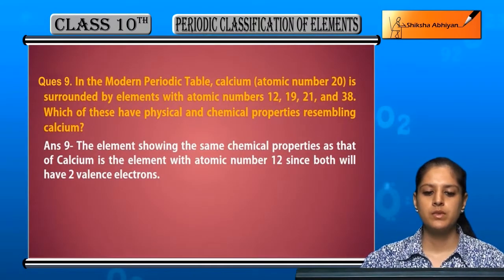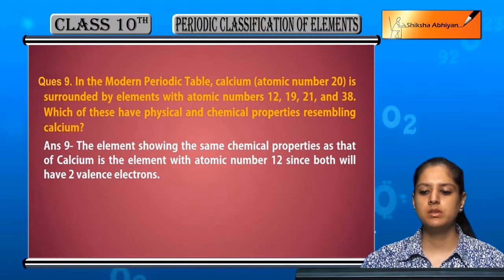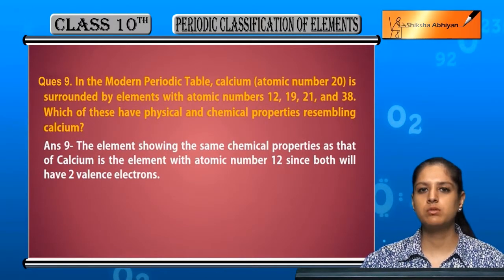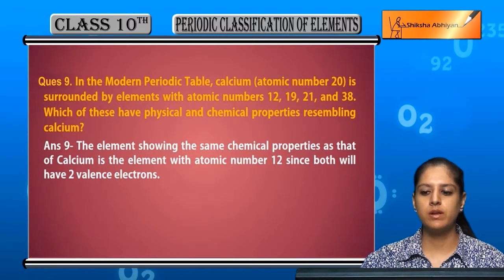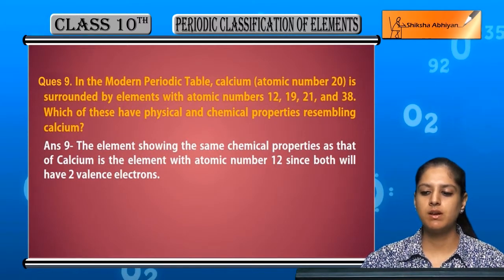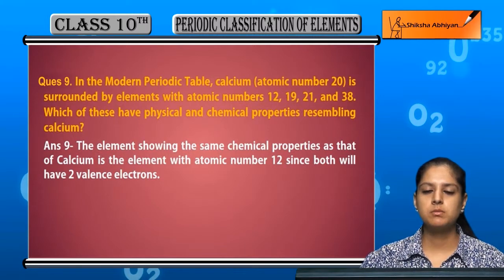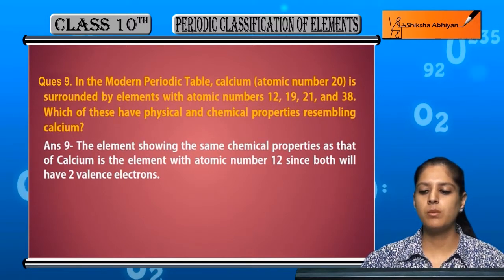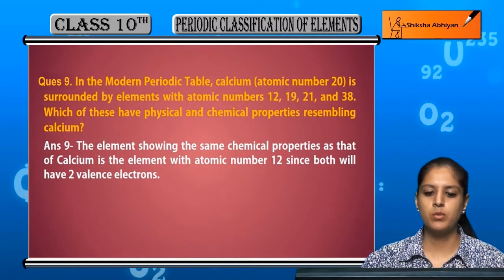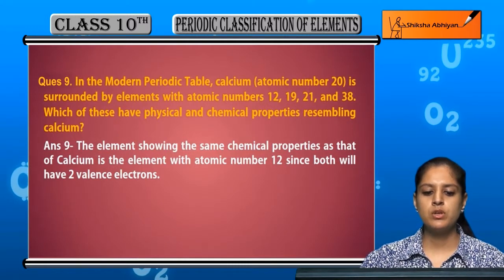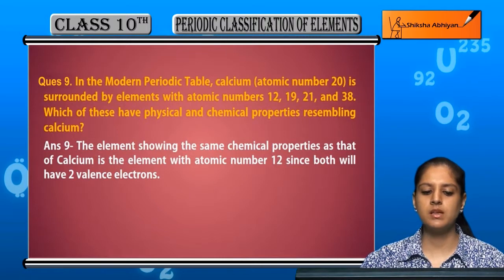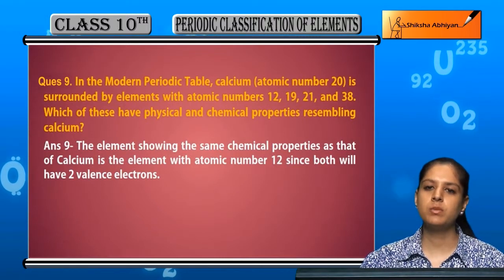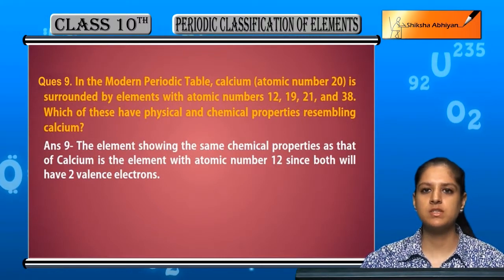Question 9: In the modern periodic table, calcium with atomic number 20 is surrounded by elements with atomic numbers 12, 19, 21, and 38. Which of these four elements have physical and chemical properties resembling calcium?